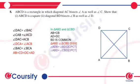ABCD is a rectangle in which diagonal AC bisects angle A as well as angle C.